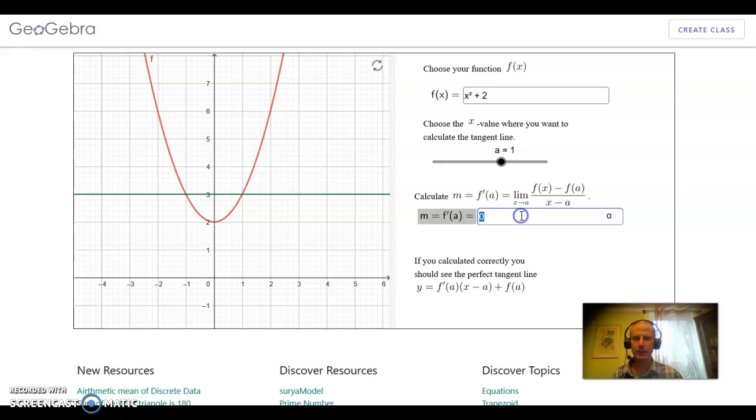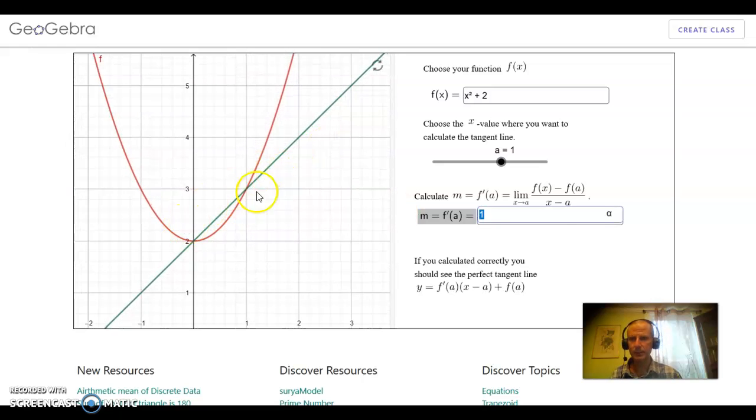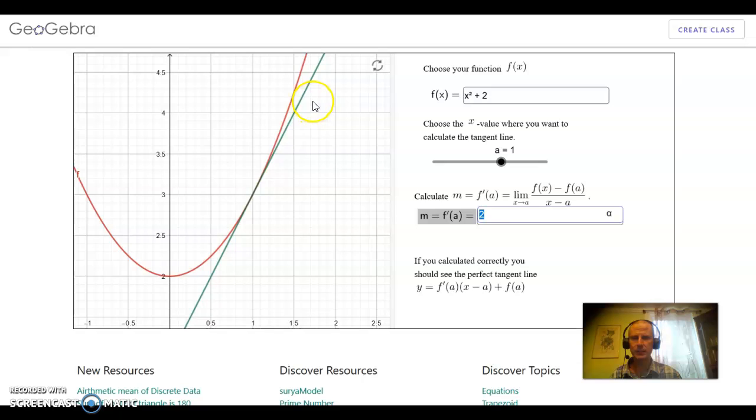You'll know you're right when you get a perfect tangent line. So right now, maybe I guess the answer is clearly not 0 because this green line isn't the tangent line. Maybe I could guess 1. And once again, it doesn't really look like we've got a tangent line there. And what if I guess 2? Well, this time, as you can see, we do get the perfect tangent line.